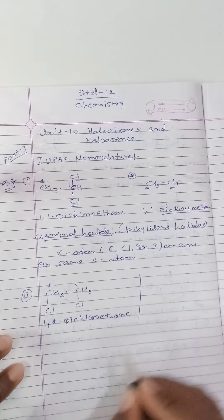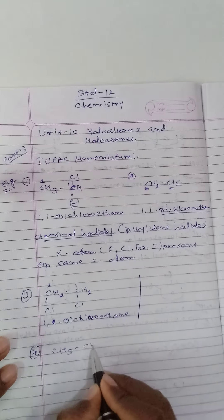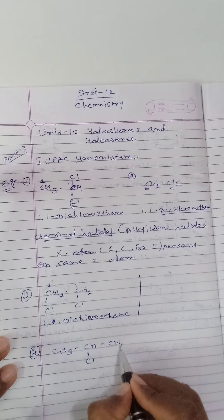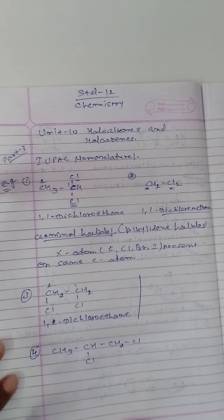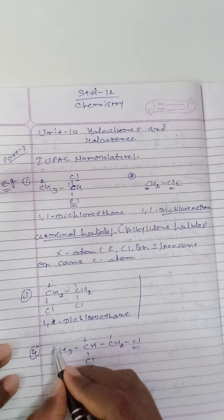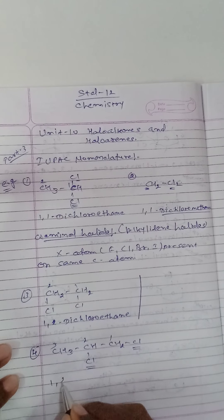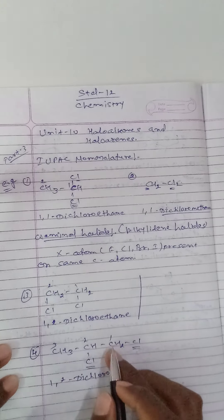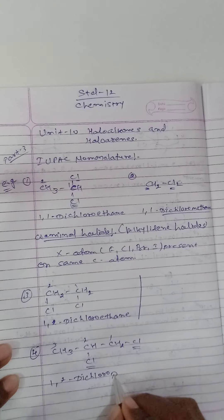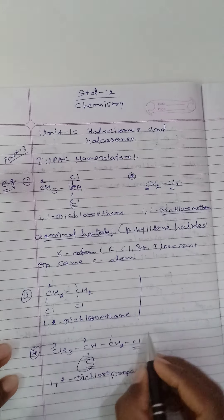Another example, number four: CH3-CHCl-CH2Cl. Here chlorine is on carbons one and two, numbered one, two, three. So we write 1,2-dichloro for two chlorine groups. For a three-carbon chain, we write propane. The IUPAC name is 1,2-dichloropropane.